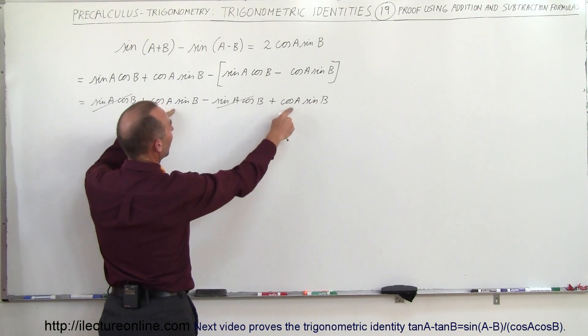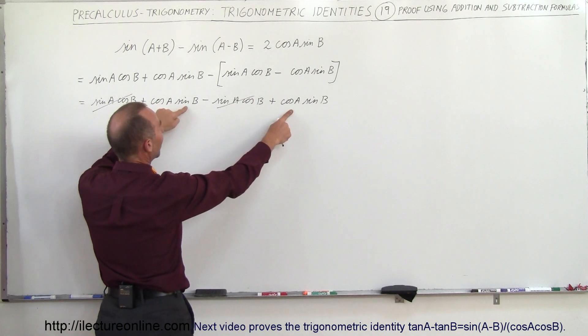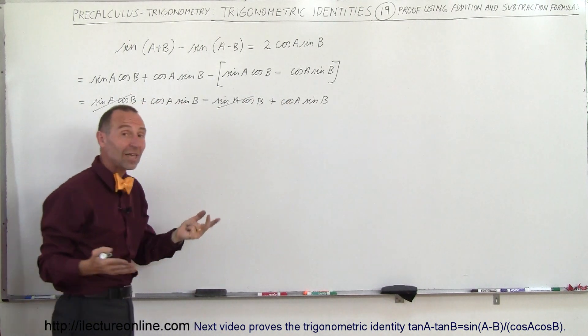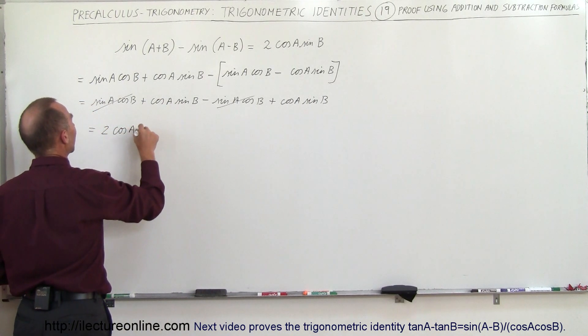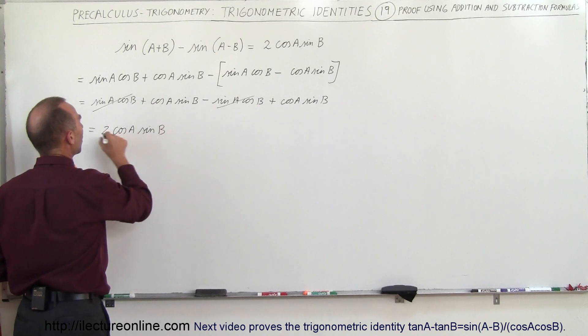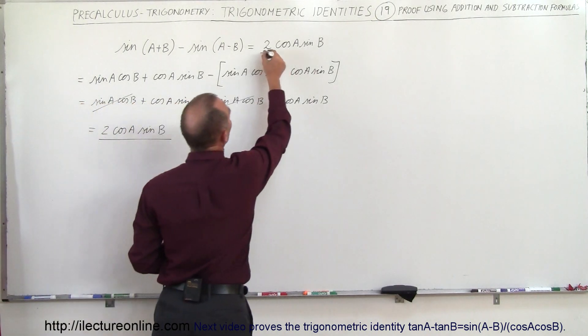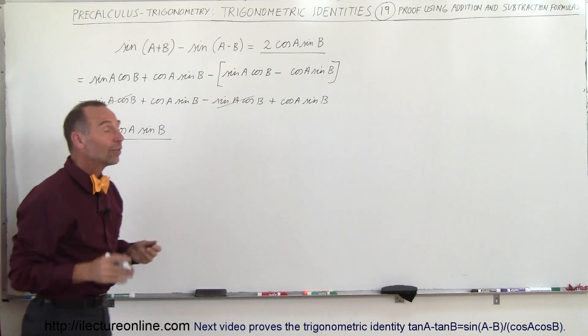So we have this left and we have that left. And notice cosine A sine B, cosine A sine B, they're exactly the same. We can add them. And so therefore this is equal to 2 times the cosine of A times the sine of B, which is what we had over there. So that proves that.